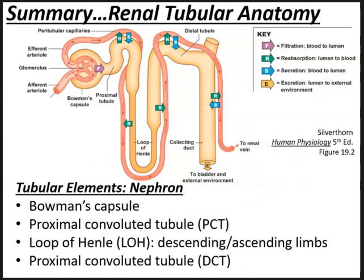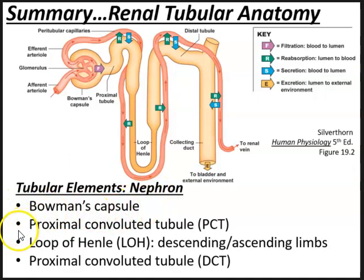The nephron is made up of two main parts: the renal corpuscle and the renal tubules. The renal corpuscle consists of the glomerulus and Bowman's capsule. The renal tubules include the proximal convoluted tubule, the descending and ascending limbs of the loop of Henle, and the distal convoluted tubule. All distal convoluted tubules drain into the collecting ducts.